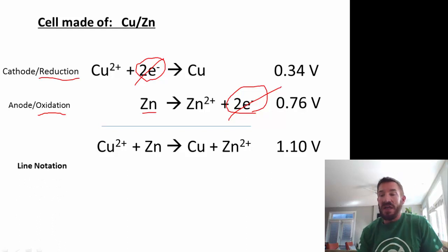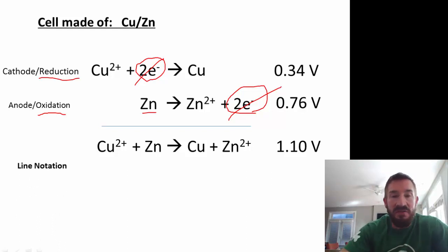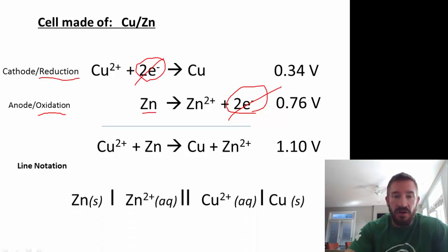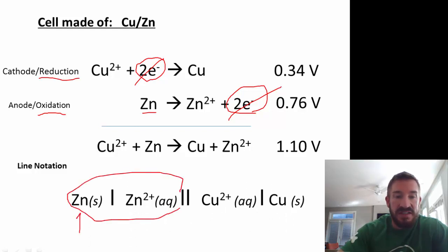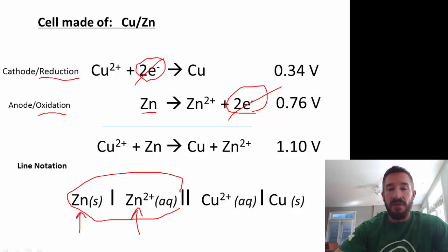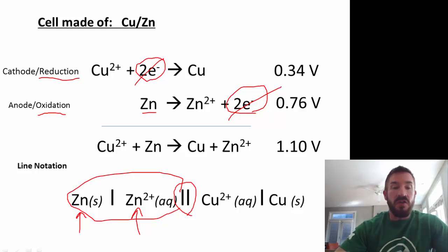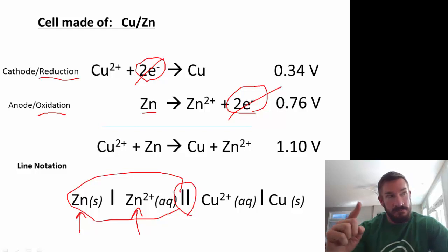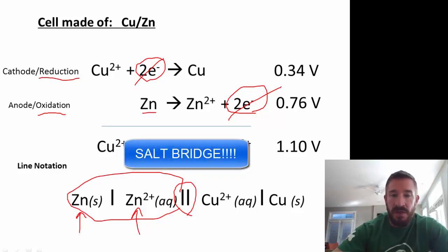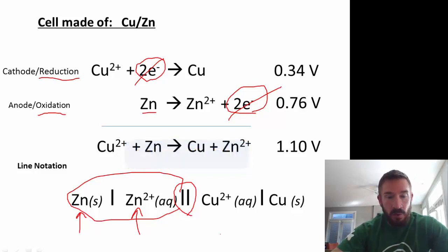The first thing that's new that I want to introduce is something called line notation. I want to write the stuff that's the anode — that would be the zinc — on the left. Everything on this side represents the anode. First, you write the electrode; notice the zinc is the electrode. And then you write the electrolyte — that's the solution — that would be the zinc ion. Then this double line in the center: you have a single line separating the electrode and the electrolyte. Then we have a double line separating the anode and the cathode, and that double line represents the salt bridge. And then we have the cathode electrolyte, and then the cathode electrode — that's the line notation.